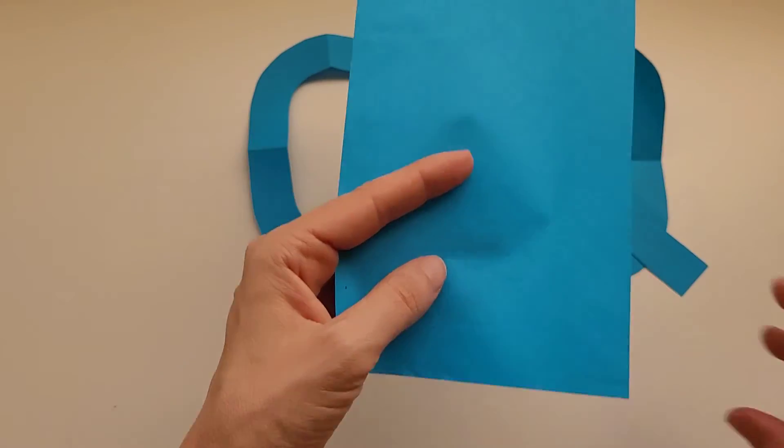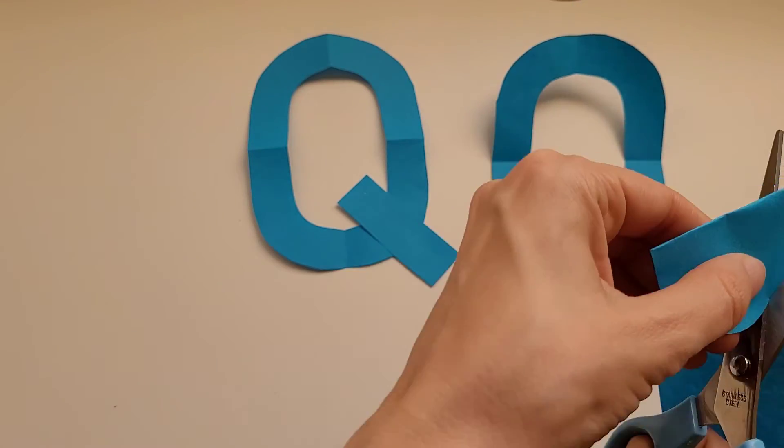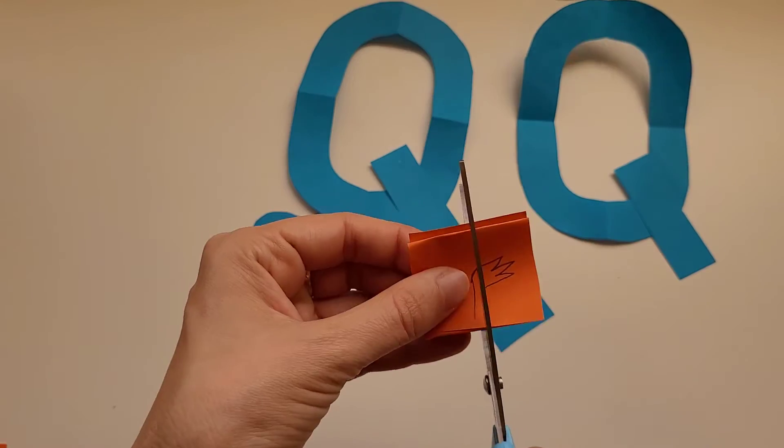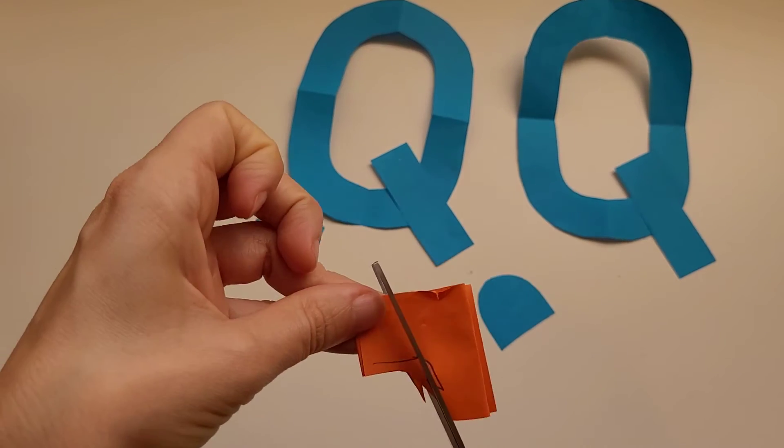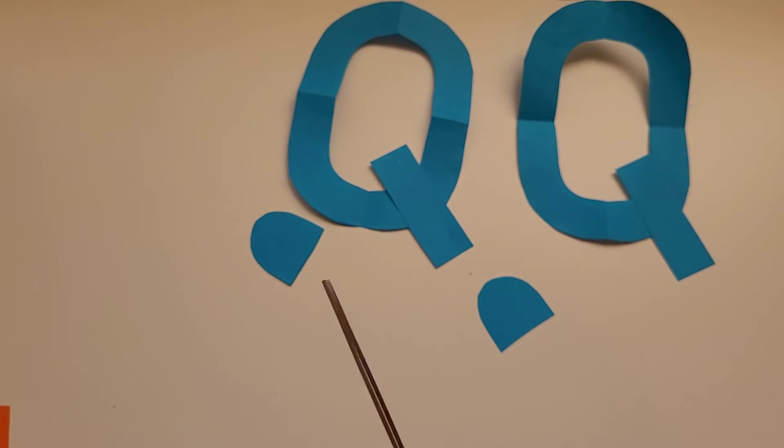When I'm done, I'm going to cut out the head and then I'm going to use some orange to cut out the feet and the beak. Once I'm done cutting out all the pieces, I'm ready to get started.